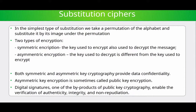The most popular approach today relies on substitution ciphers. Substitution is used to replace some letters or digits forming the plaintext with other letters or digits. In the simplest type of substitution, we take a permutation of the alphabet and substitute each letter by its image under that permutation. This leads to two types of substitution-based encryption: symmetric and asymmetric.